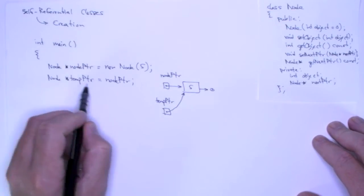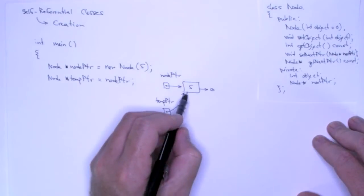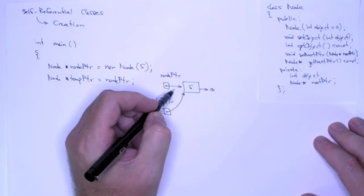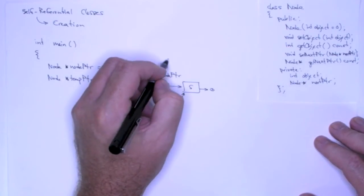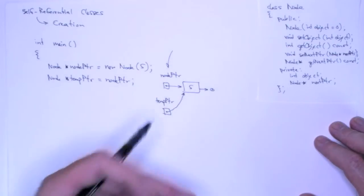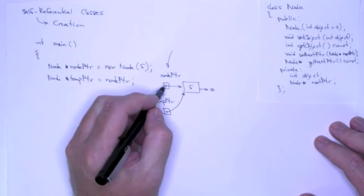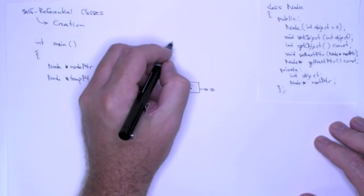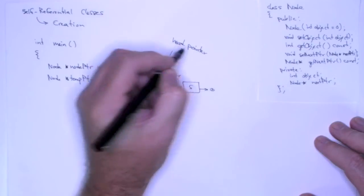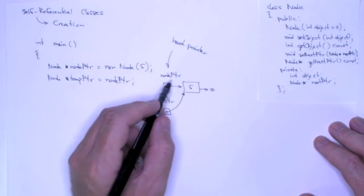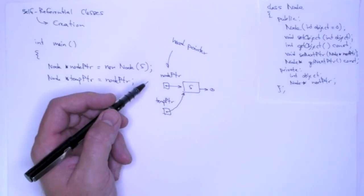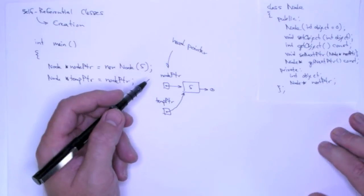So what I'm doing here is I'm creating temp pointer, and I'm just making it point to node pointer. What I'm going to do is I'm not going to change and use node pointer at all, and generally this is what you want to do. This is the end of your kite string, and you never want to release this thing that we call a head pointer. And the head pointer always points to the first element of the list, and as long as you maintain the integrity of that pointer to the first node of the list, then you can get to all the other elements of the list.